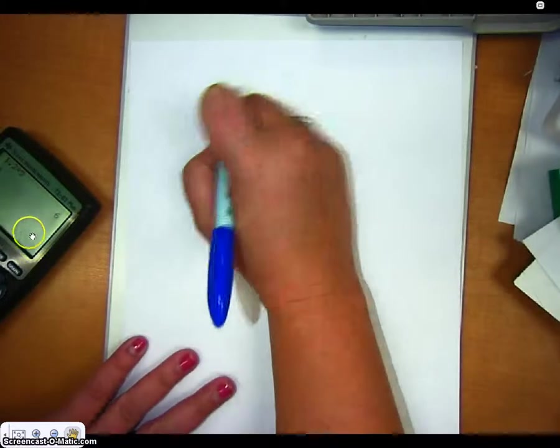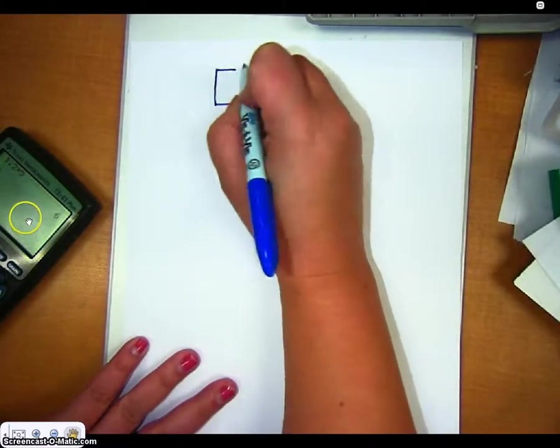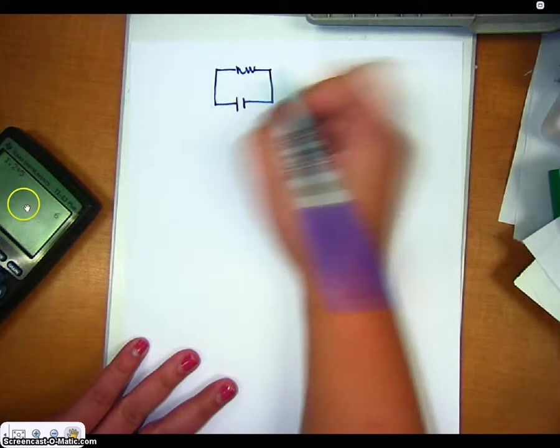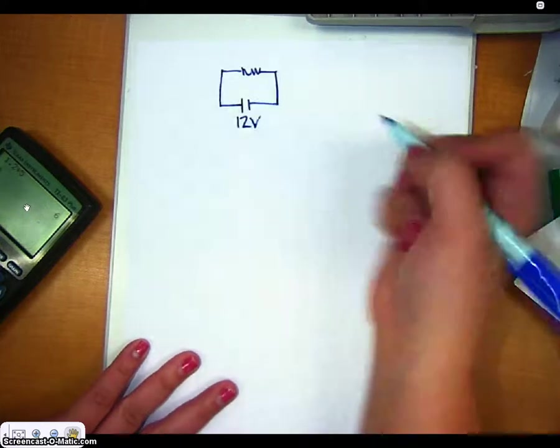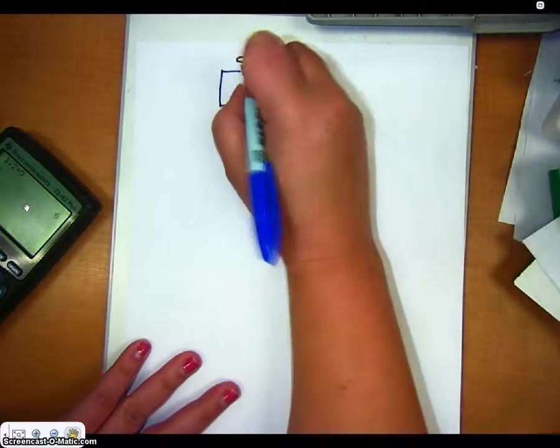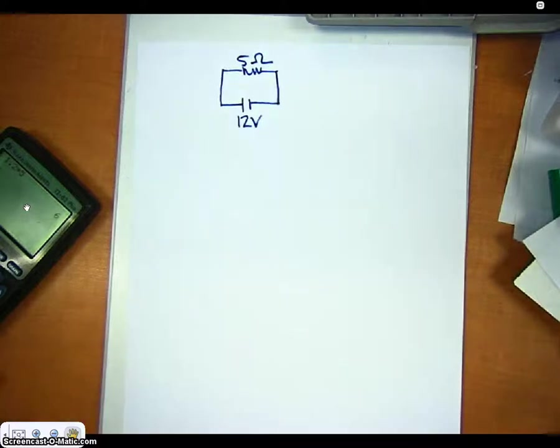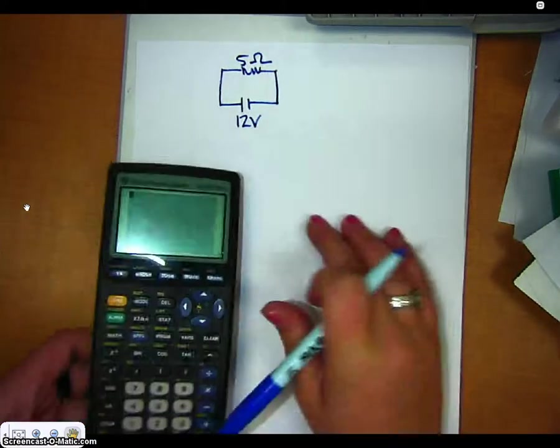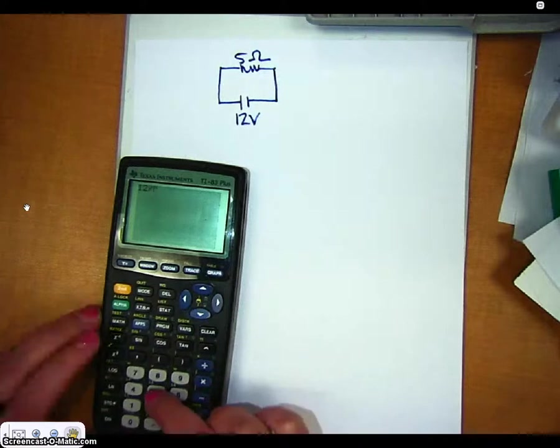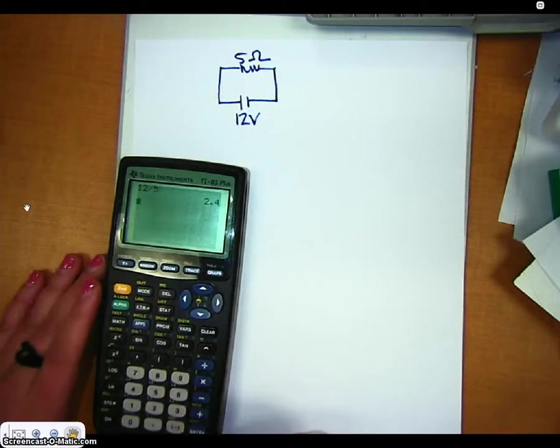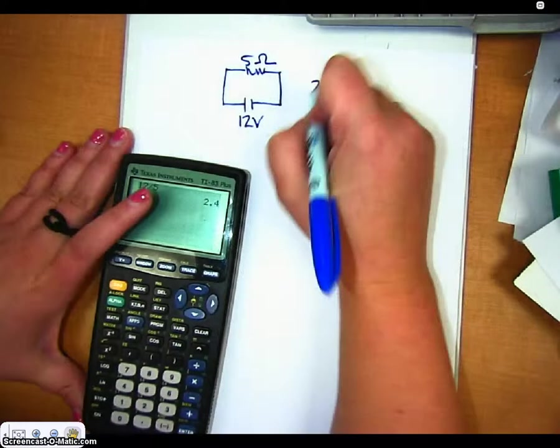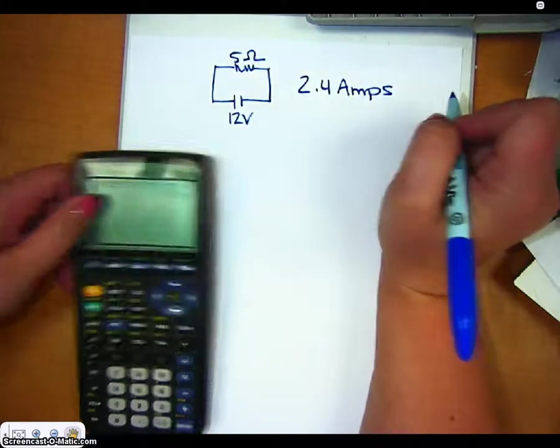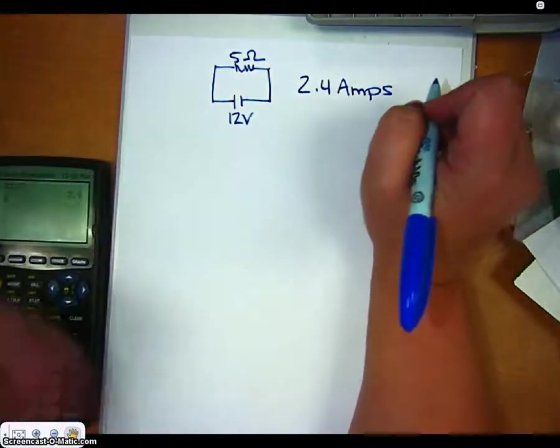So in the last video we ended by looking at just a very simple schematic for a very basic circuit with one source and one resistor. So we could figure out the current going through that by using Ohm's law. So we've got 12 volts divided by 5 for resistance and I see that this circuit has a current of 2.4 amps going through it.